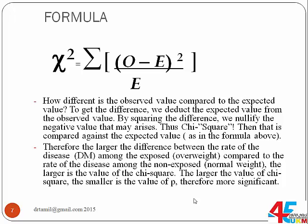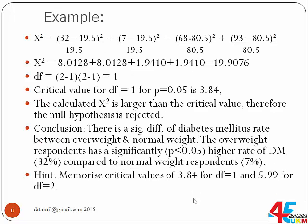The larger the value of the chi-square, the smaller the p-value, and therefore the result is more significant. In this example, the observed value was 32 and the expected value is 90.5. So 32 minus 90.5 squared divided by 90.5: the difference is 12.5, squared gives 165.25, divided by 90.5 gives 8.0128.